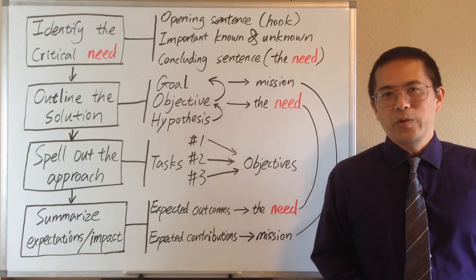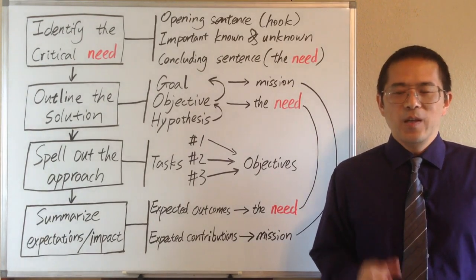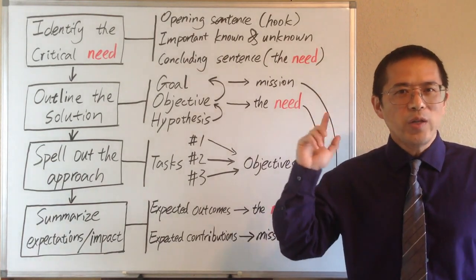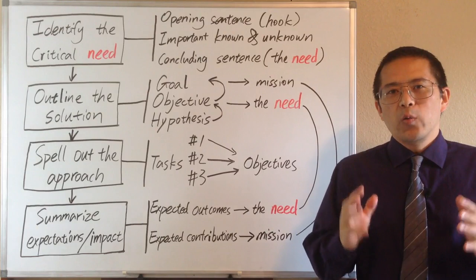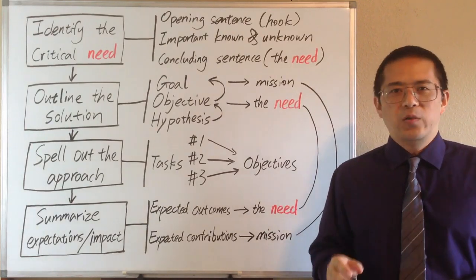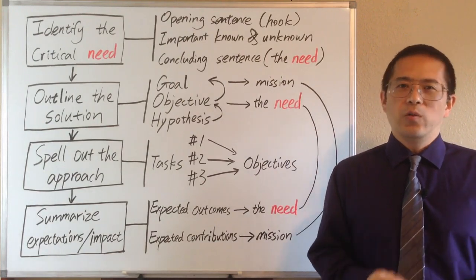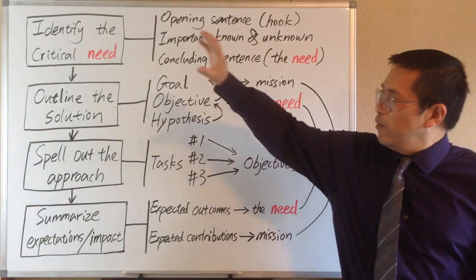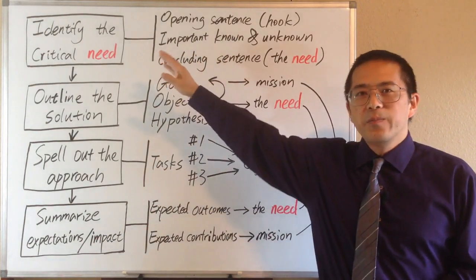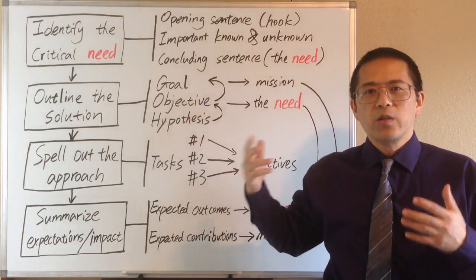A research proposal usually takes the form of persuasion. First, we need to convince our readers that we have a good idea. Second, we need to convince them that we have a feasible plan to realize that idea, and we are ready to go. So in the four-paragraph model, we use the first paragraph to convince our readers that we have a good idea.